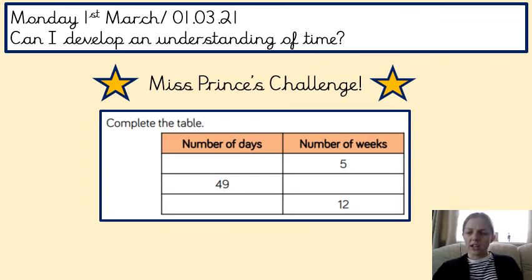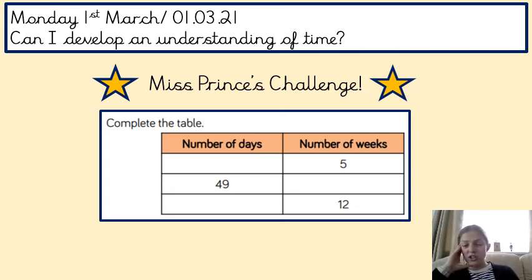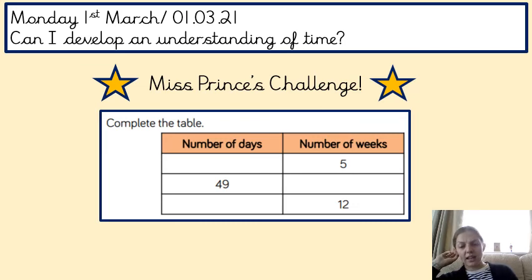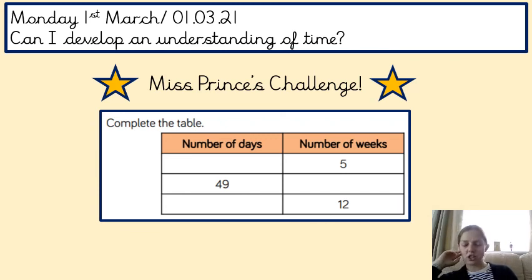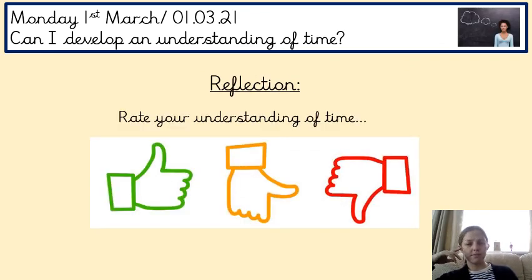For your challenge, complete the table converting between days and weeks. We know there are seven days in one week — so how many days are in five weeks, and how many days in 12 weeks? You also have the number of days that need converting to weeks: if there are 49 days, what do you divide by to find the number of weeks? We're using multiplication and division to keep building fluency and confidence with numbers.